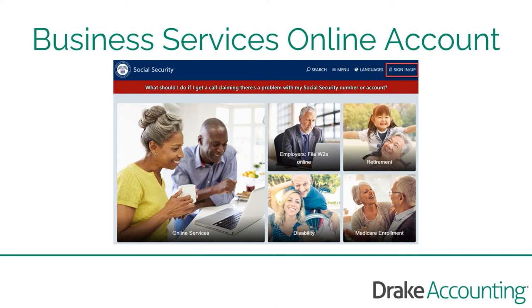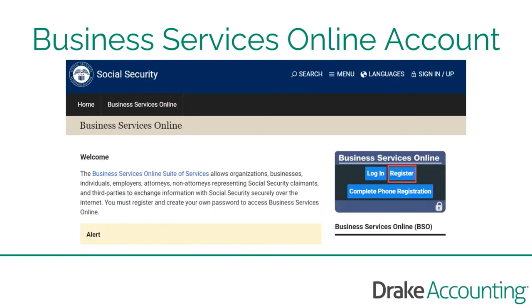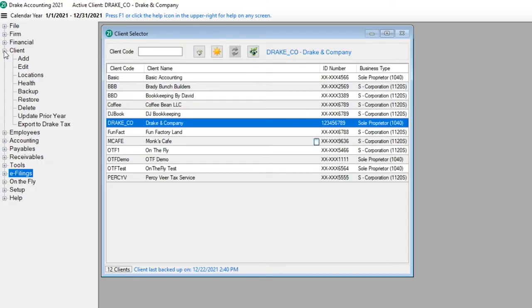Go to SSA.gov and click Sign In or Sign Up. Choose Business Services Online. Click Register and complete the requested information. Be sure to add SSA services suites for employers to your account. Go to Firm Information Setup and enter your BSO user ID.